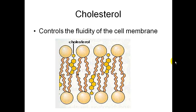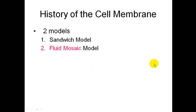Another component of the cell membrane is cholesterol. Cholesterol is a steroid, and you can see the four rings here. Cholesterol molecules are embedded within the fatty acid tails, and what that does is control the fluidity of the cell membrane.